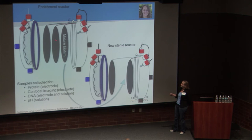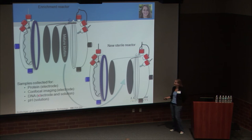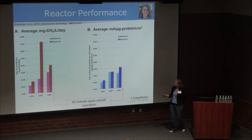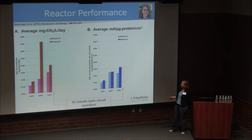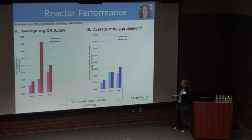We also applied a sub-passaging method to try to enrich our microbiomes faster, then monitored current consumption, pH, methane production, protein, and did 16S taxonomic classification throughout operation. In the sub-passage methodology we have a mature biofilm living on one of three electrodes operating together as a system, then we slice off one of the biofilm sections and move it into a new sterile reactor sandwiched between two new sterile electrodes. Every time we do a sub-passage we collect protein from the surface, do confocal imaging to see who's there, collect DNA, and monitor pH. Sub-passaging happens about every 14 days, and we see activity starting to increase.